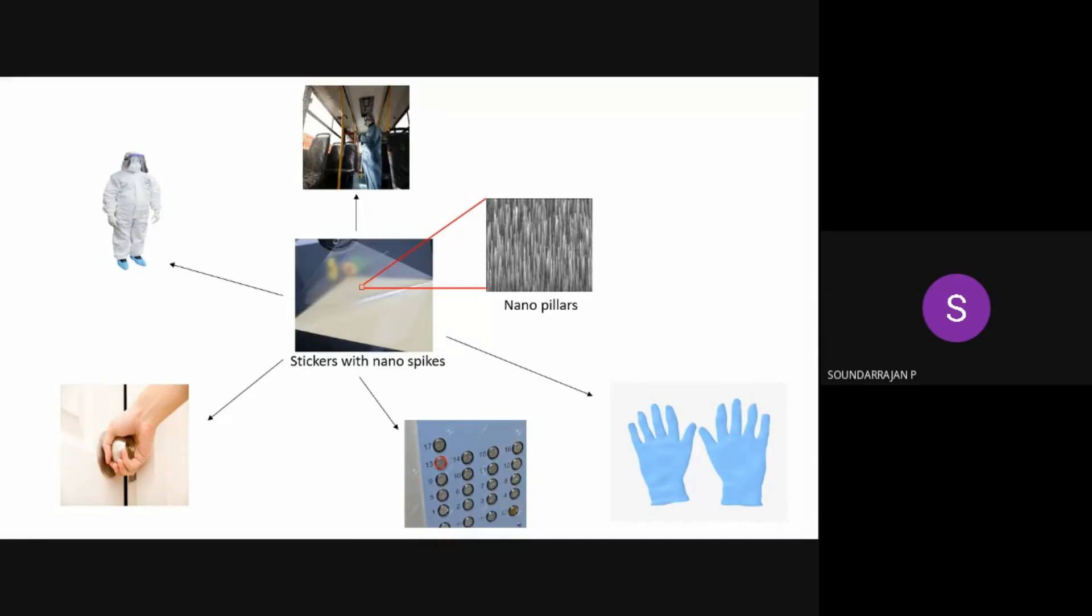So these nanospikes or pillars when coated onto surfaces that we normally come in contact with like the door knobs or the handles can help us in preventing the further spread of viruses.